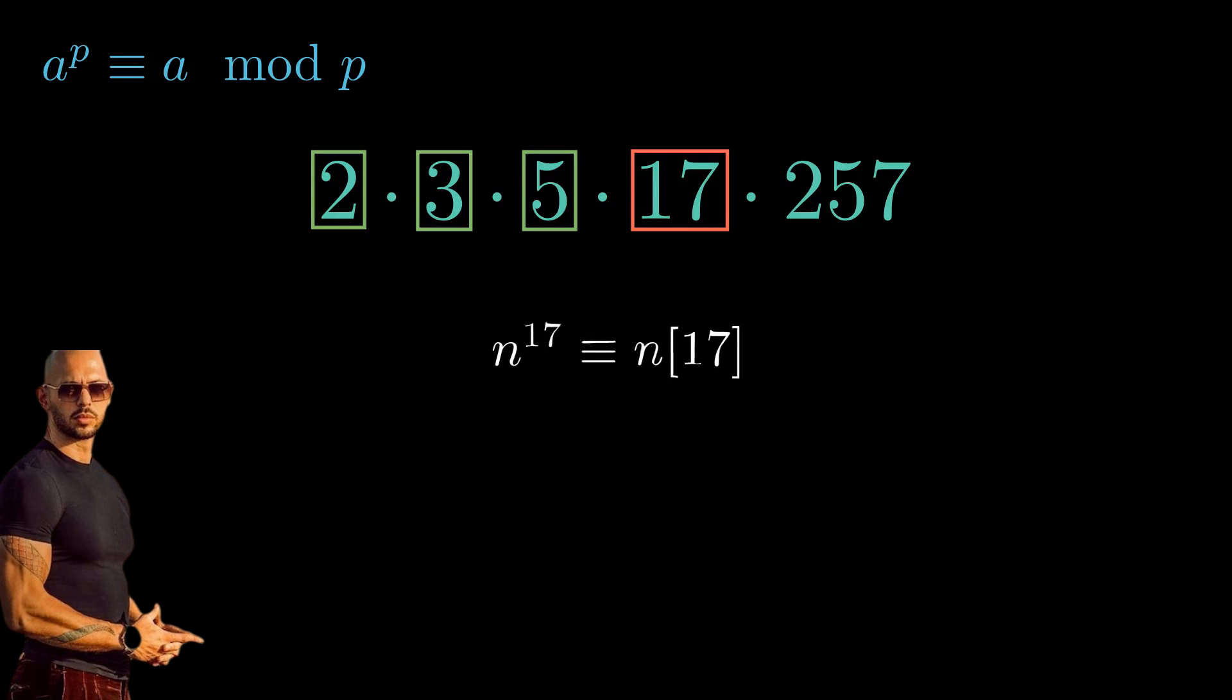And what about 17? It's a prime, so Fermat's little theorem applies directly. No tricks needed here. So 17 divides it as well. We've handled the small primes, but what about 257?